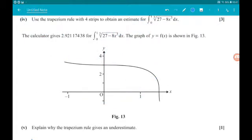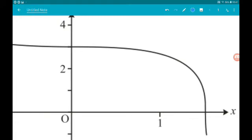Okay, then for the final part, we are given the actual value that the calculator gives for the integral, 2.99 and so on. The graph of the function is shown. We want to explain why the trapezium rule gives an underestimate. So if we were to draw the trapeziums, we can see that there is area between the top of each trapezium and the curve. This area is not accounted for using the trapezium rule, so we have missing area, which means that we would always get an underestimate.